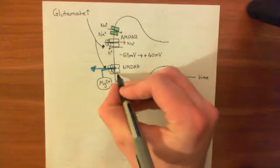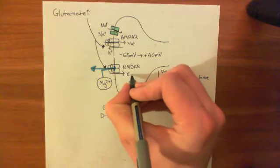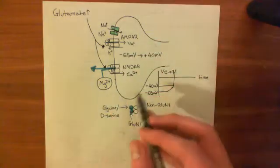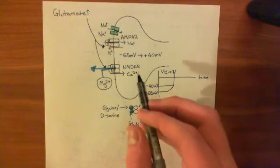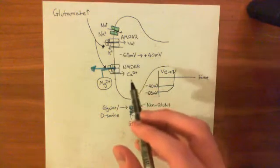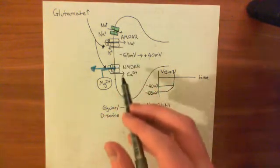So basically, the important thing that the NMDA receptor is going to do is it's going to let calcium come into this neuron. And basically, now you're going to get even more calcium into this neuron. If this neuron didn't have too much calcium already because of the ATP crisis that it's got on,